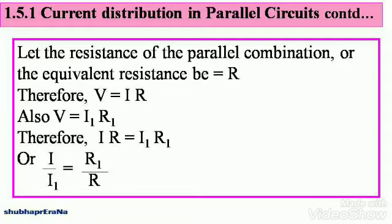By substitution, you get IR is equal to I1 R1. Rearranging accordingly, we get I divided by I1 is equal to R1 divided by R. You see that current is inversely proportional to the respective resistance.